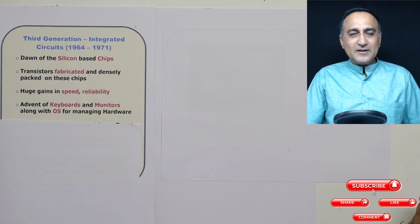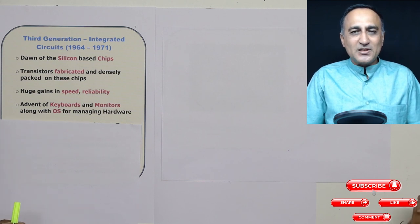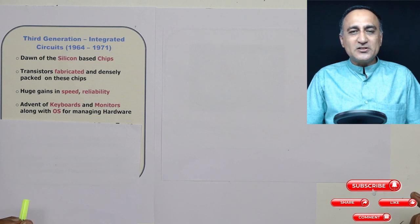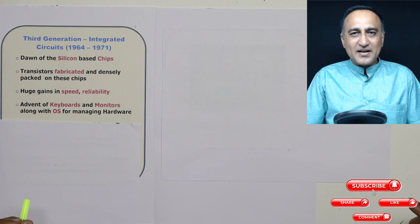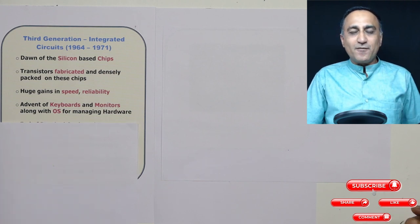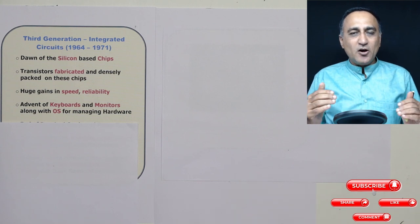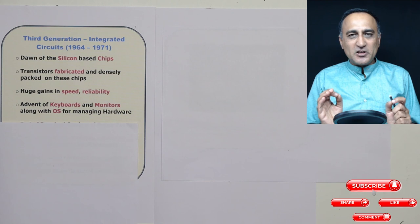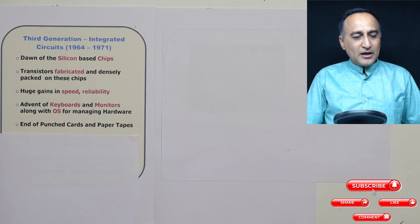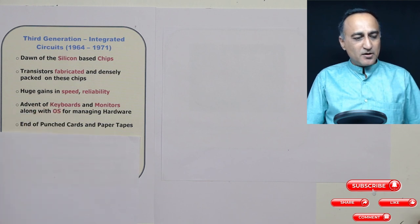Another important development was the introduction of keyboards for data input, as well as monitors — called operator consoles — for interacting with computer hardware. The operating system also came into picture for managing computer resources. The OS made its entrance for the first time, and this also marked the end of punch cards and paper tapes.